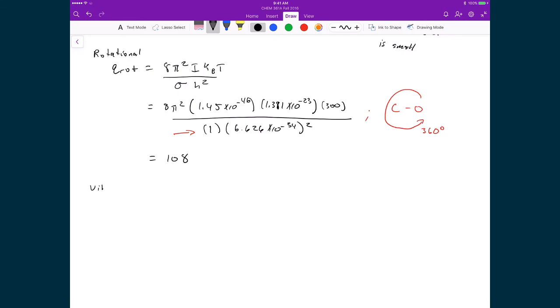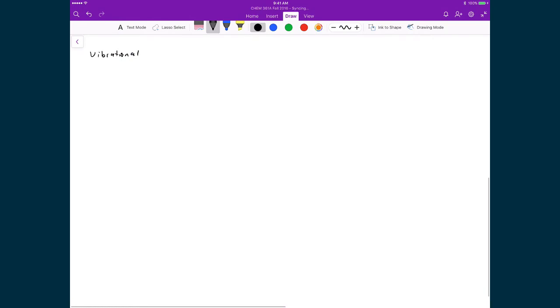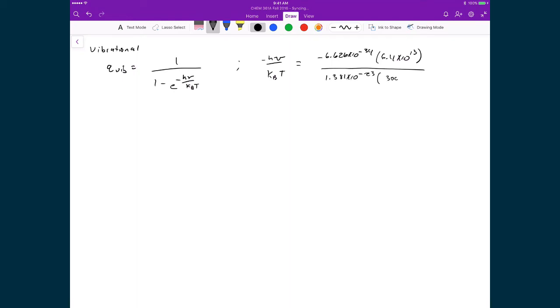The final one is vibrational. And so in this case, my q vibrational, that's equal to 1 over 1 minus e to the negative h nu over kbt. And so as an aside, let's just calculate the minus h nu over kb times t. In this case, we've got negative 6.626 times 10 to the minus 34. That's going to be times 6.4 times 10 to the 13, which was the number given in the problem, being the fundamental frequency for the CO bond. Boltzmann's constant, 1.381 times 10 to the minus 23, and that's going to be multiplied by 300. And so then this number is going to be equal to negative 10.24.